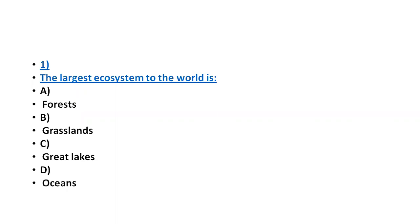The largest ecosystem in the world — the options include forest, grassland, great lakes, and oceans. Obviously, the correct answer is oceans. Oceans are considered the largest ecosystem in the world.